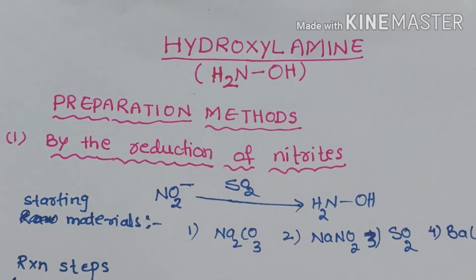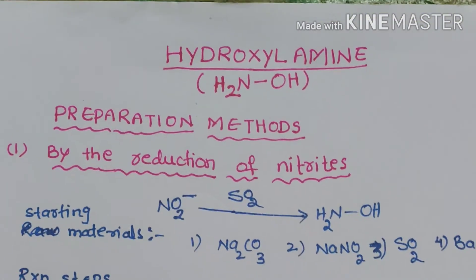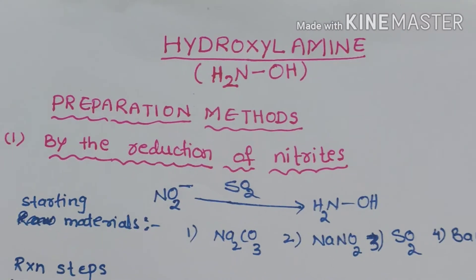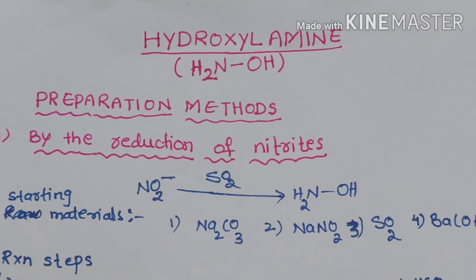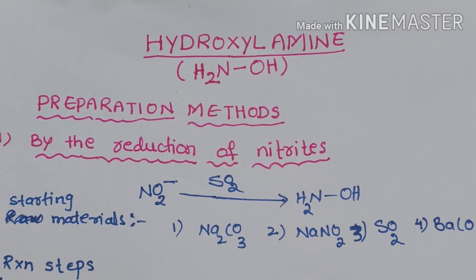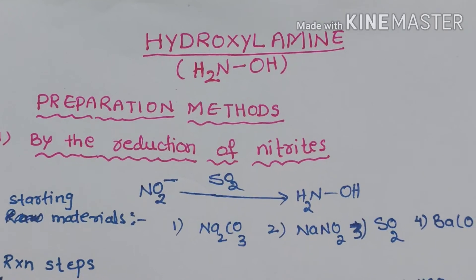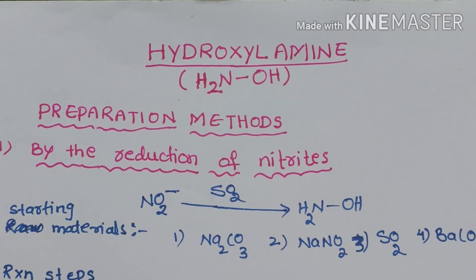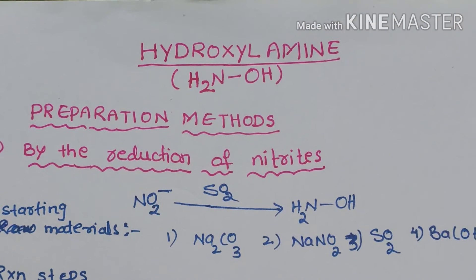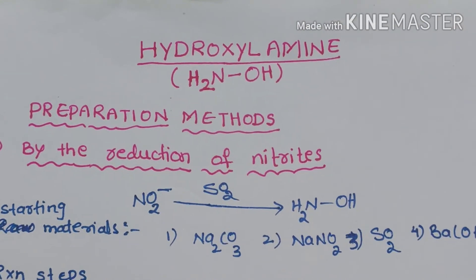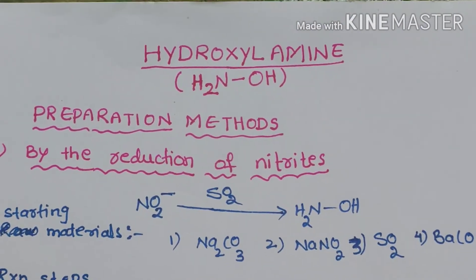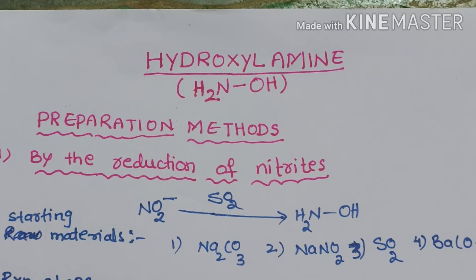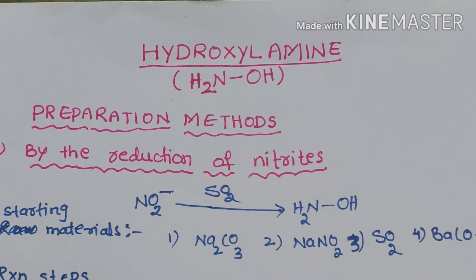Hello students. In this video I want to explain the preparation, properties, and structure of hydroxylamine. The formula of hydroxylamine is NH₂OH. This formula can be easily remembered because amine group means NH₂ group and hydroxyl group means OH group, so the formula of hydroxylamine becomes NH₂OH.